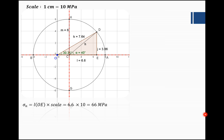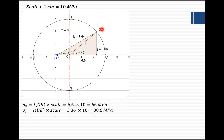Measure the length OE: it is 6.6 multiplied by the scale of 10, giving 66 MPa. So the normal stress is 66 MPa. The tangential stress is given by DE: the measurement is 3.86 multiplied by 10, which is 38.6 MPa. The resultant stress on plane AE is given by length OD: 7.64 multiplied by 10 gives 76.4 MPa. In this way we can calculate the normal stress, tangential stress, and resultant stress on plane AE inclined at 20 degrees with the major principal plane.